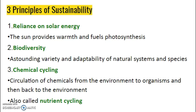We're going to focus on biodiversity, which is the astounding variety and adaptability of natural systems and species — we'll spend a lot of time on that. And then chemical cycling, which could be nutrient cycling, could be food webs, all those types of things. So those are the three themes of the book.